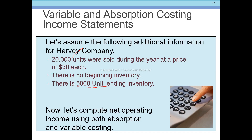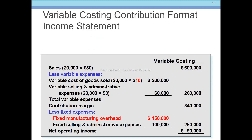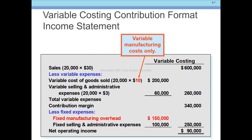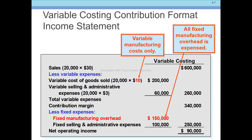Now let's compute the net operating income by using both the variable costing method and the absorption costing method. First, let's use the variable costing method.